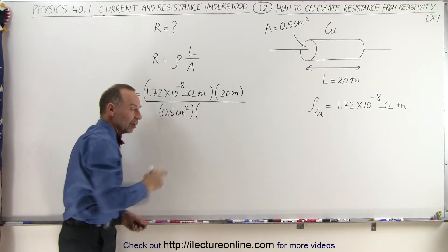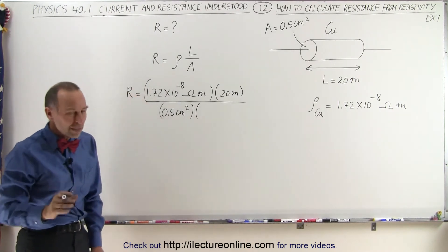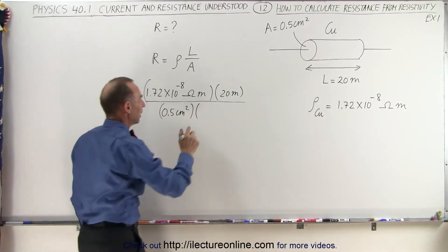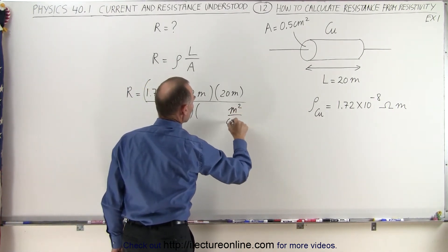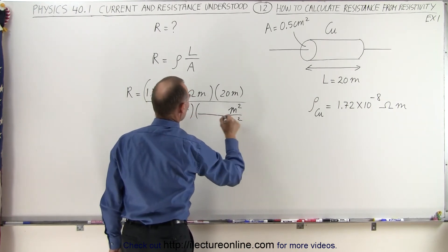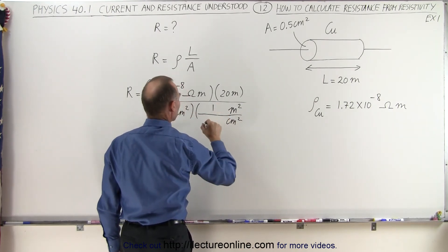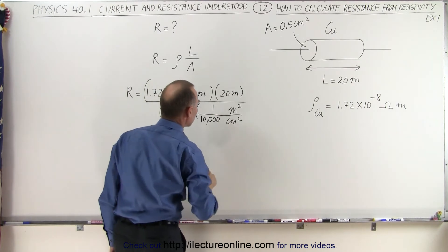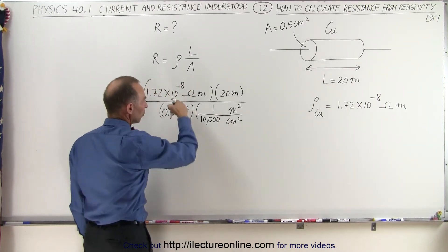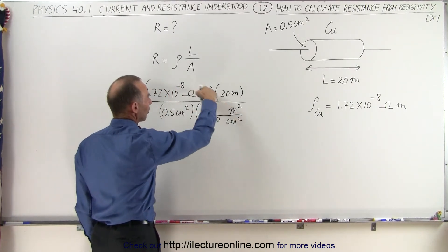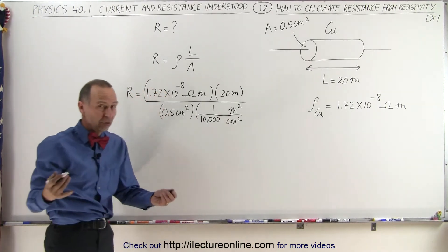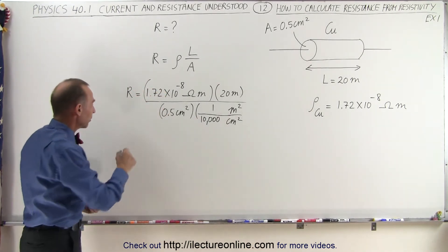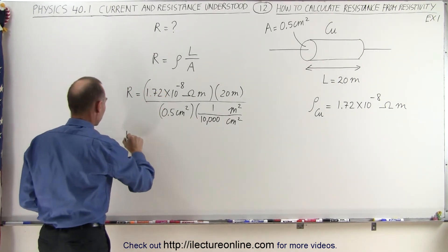We have to convert centimeters squared to meters squared. The relationship is: one square meter equals 10,000 square centimeters. Notice the centimeters cancel out, the meters cancel out, and you're just left with ohms, which is what to expect because we're looking for resistance.